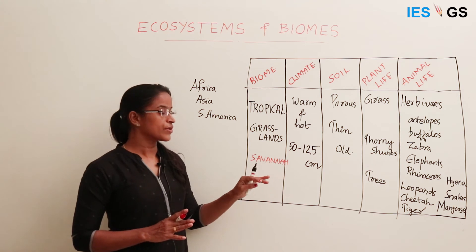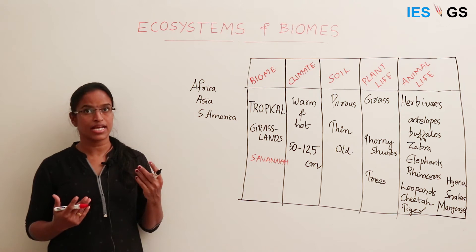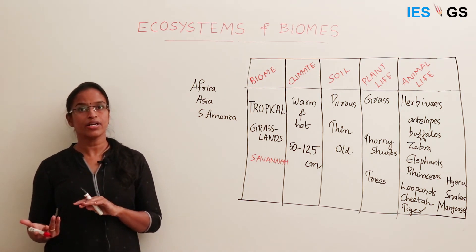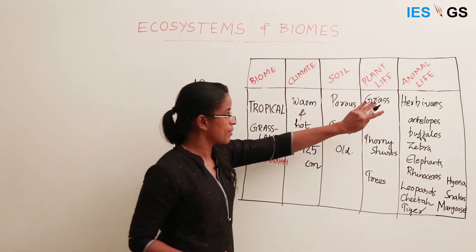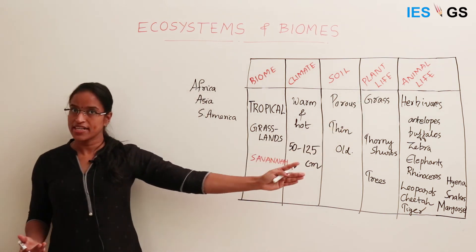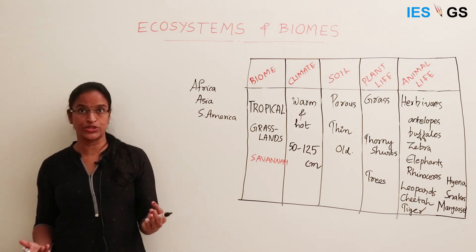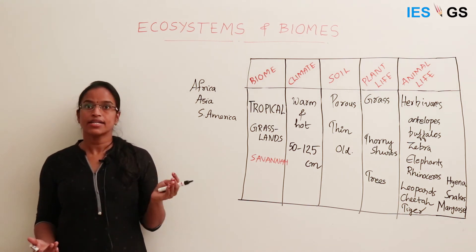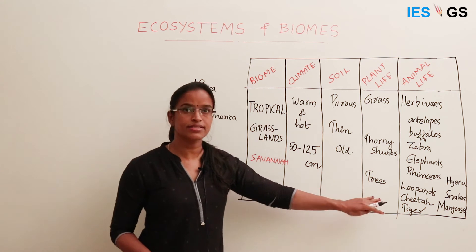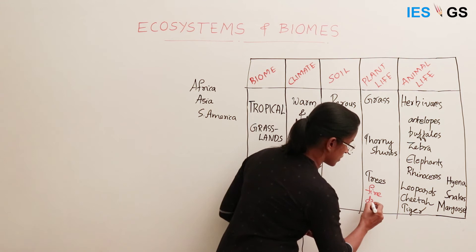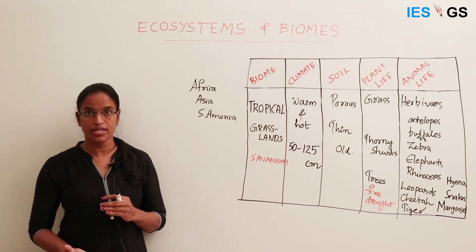The water availability makes these soils not suitable for extensive agriculture or plant life, but if you provide enough irrigation, they can be converted to agricultural lands — like is being done in the Rajasthan region using the Indira Gandhi canal. Water is the limiting factor. The main plant variety is grass; compared to temperate grasslands, these grasses are taller, sturdy, and less juicy. Trees are very limited — only occasional trees that are fire-resistant and drought-resistant varieties.